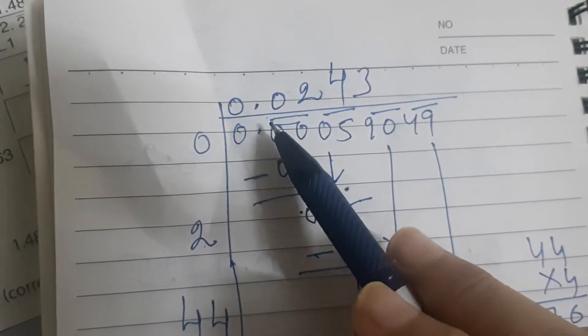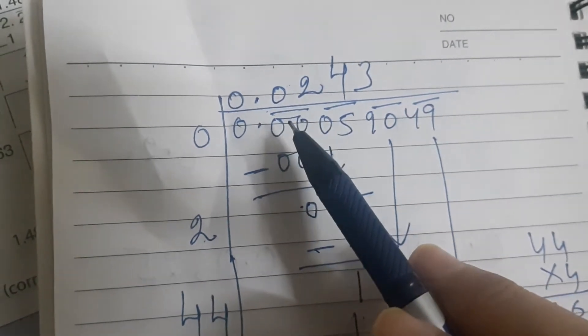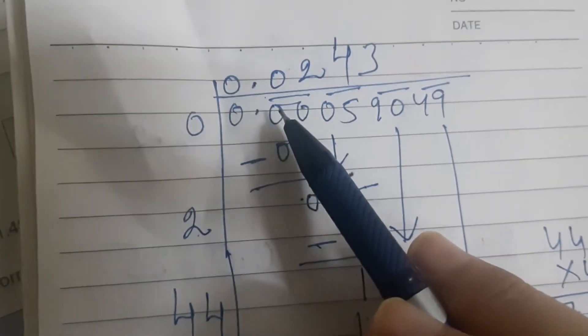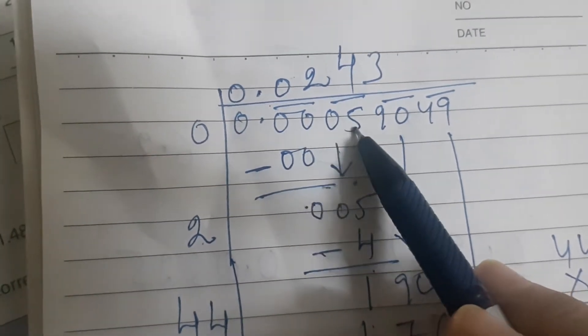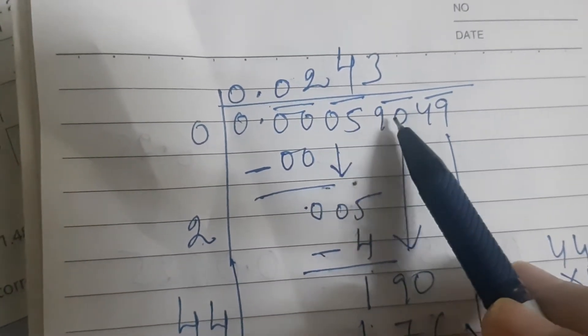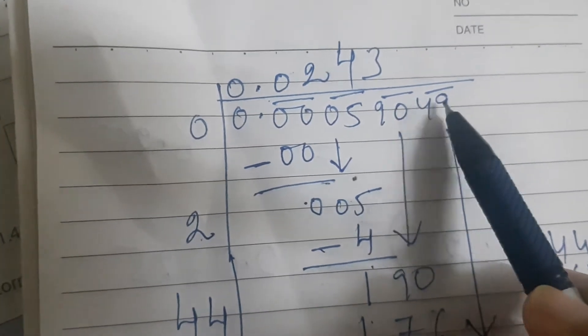So we will be starting from left to right and we will mark the periods. So first period is 00, second is 05, third is 90, and fourth is 49.